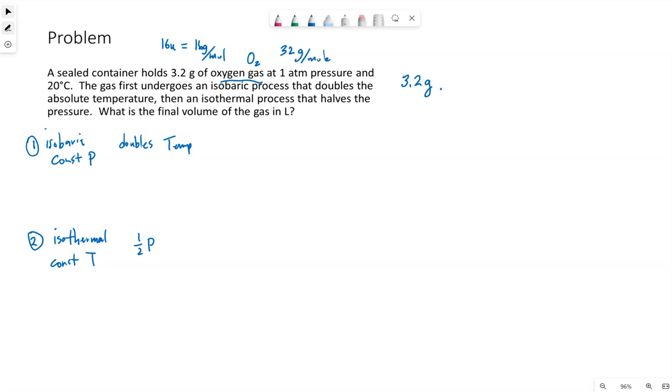I'm going to use that as my conversion factor. The grams will cancel, and this will give me how many moles I have. So 0.1 moles. This is n, lowercase n specifically.